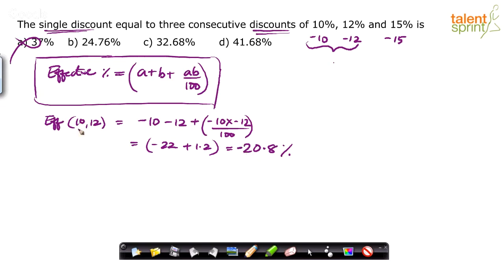Now, what does this minus sign indicate? That the effective of these two is giving a negative value, which means overall, the discount will be 20.8% or overall change will be minus 20.8%. Now, with this minus 20.8 and the left out value of 15 apply effective. Now, apply effective on these two values.